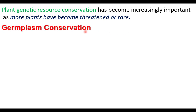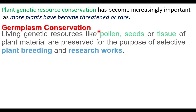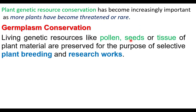Germplasm conservation is a part of conservation of plant genetic resources. Germplasm includes pollen, seeds, and tissues, which can be used for plant breeding and research work. The germplasm carries genetic information from one generation to another generation.